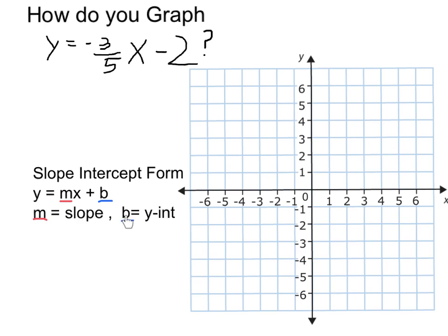And the thing that's added or subtracted at the end is going to be the y-intercept. Because we're subtracting 2, that means our y-intercept is at negative 2, and therefore our graph actually goes through negative 2 on the y-axis right here.